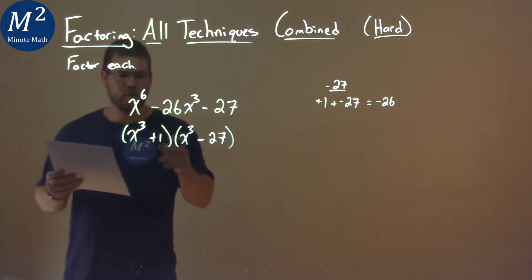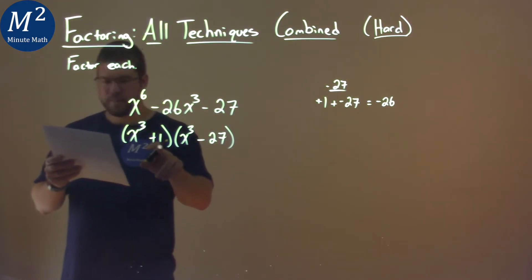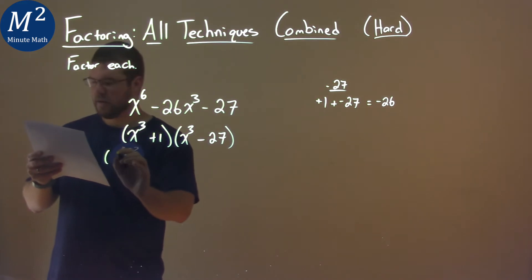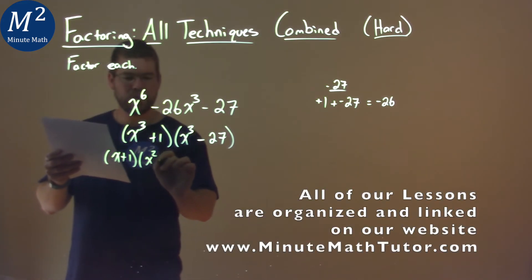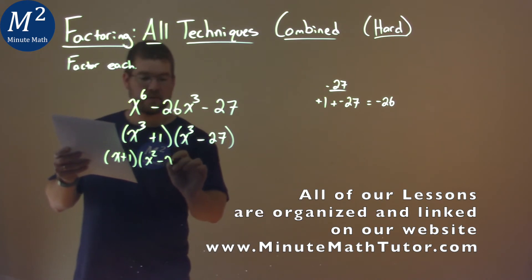So if you remember the sum of cube formulas, with base value x and base value 1 here, this first part will break down to be x plus 1 times x squared minus x times 1, which is just x, and plus 1 squared, which is 1.